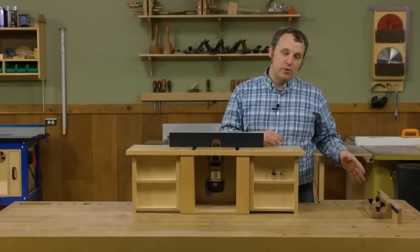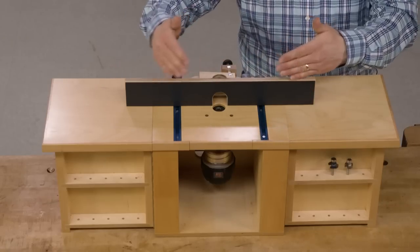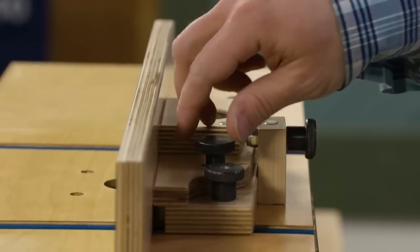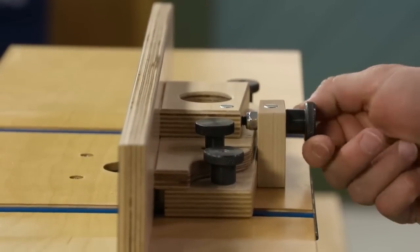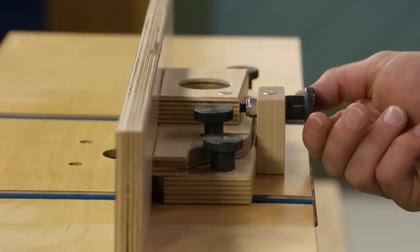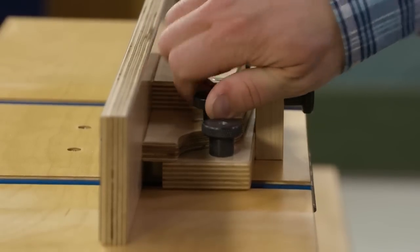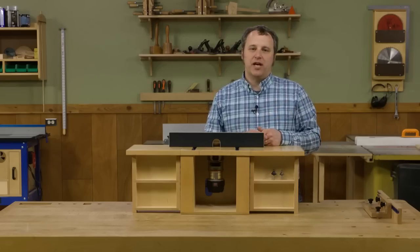But where this one stands apart from the original model is that this whole front assembly here pivots on a bolt back here. I can loosen this mounting knob and then turn a knob on the back and I can adjust the fence face forward or back in very fine increments to be able to dial in a specific type of cut.